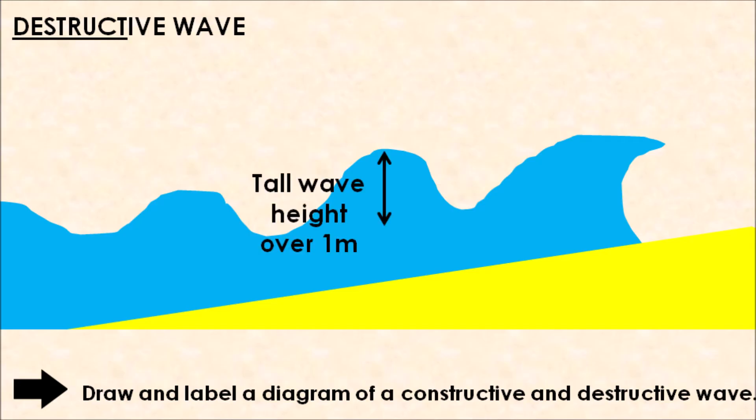Destructive waves, in comparison to constructive waves, have really tall wave heights. On average, they are over one meter in height. A destructive wave has a weak swash. When a destructive wave approaches the beach, it has very little energy because it takes so much energy to create that really tall wave height.